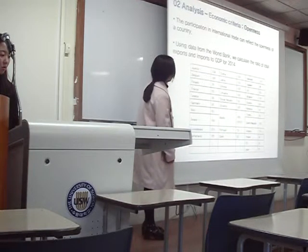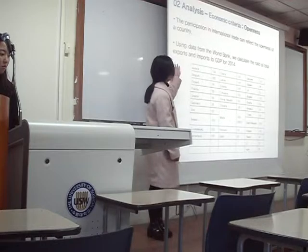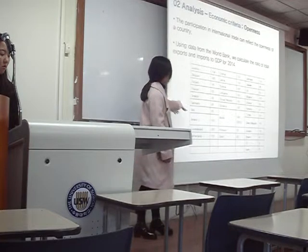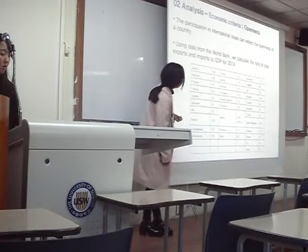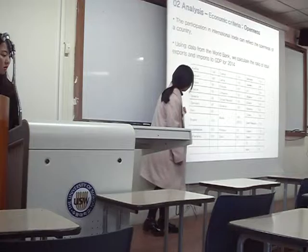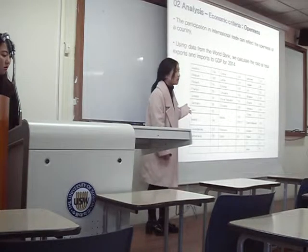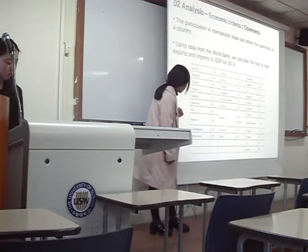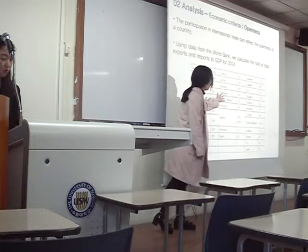The third criterion is openness. When we check openness, we usually use total exports and imports, as participation in international trade can reflect a country's openness. Using data from the World Bank, we calculated the ratio of total export and import to GDP in 2014. Most European countries are very often almost reaching an average of 100%, nearly three times higher than the U.S. Small countries like Luxembourg and Malta reach 371% and 183% respectively.